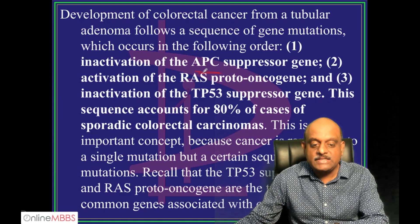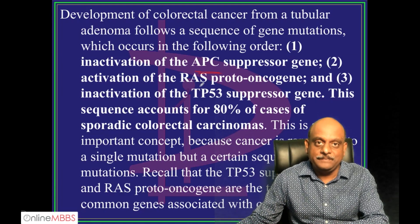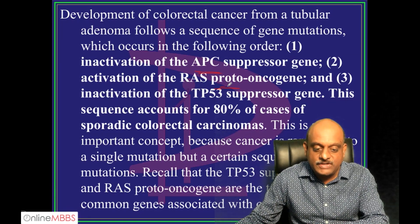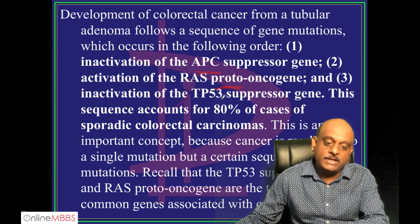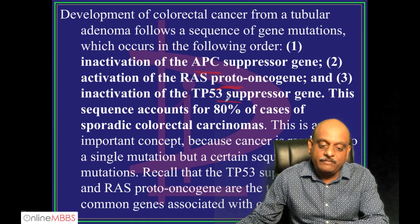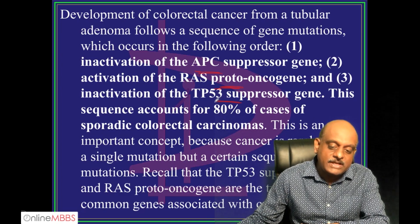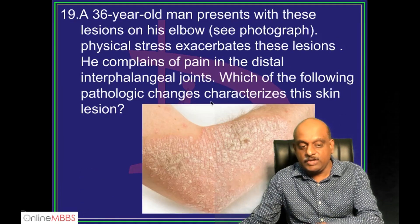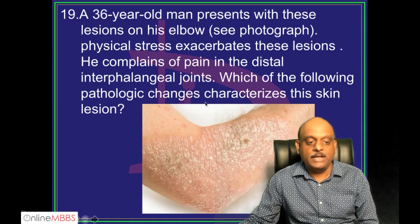APC is a suppressor gene. RAS is a proto-oncogene. TP53 is a suppressor gene. Here's what you need to remember.